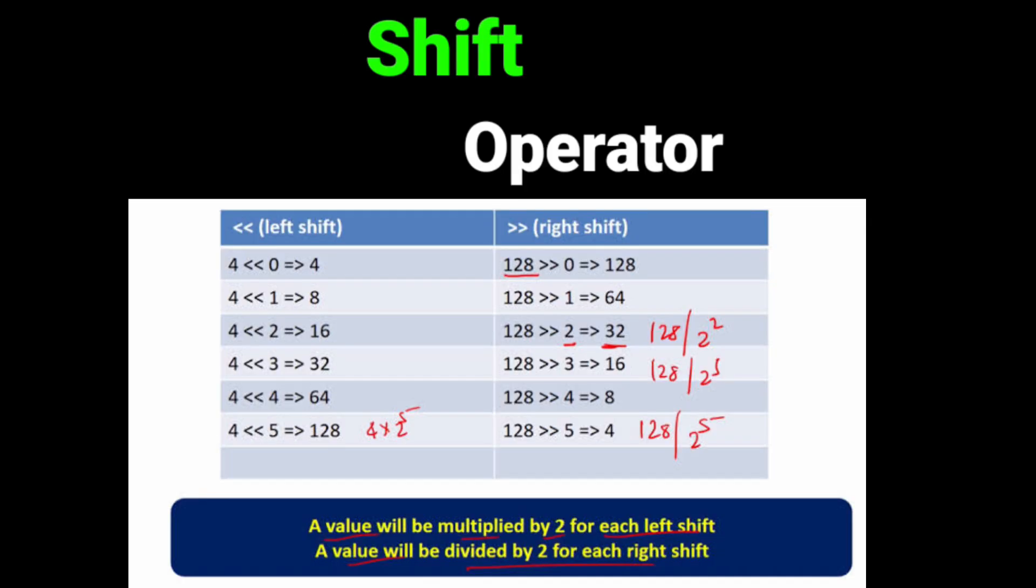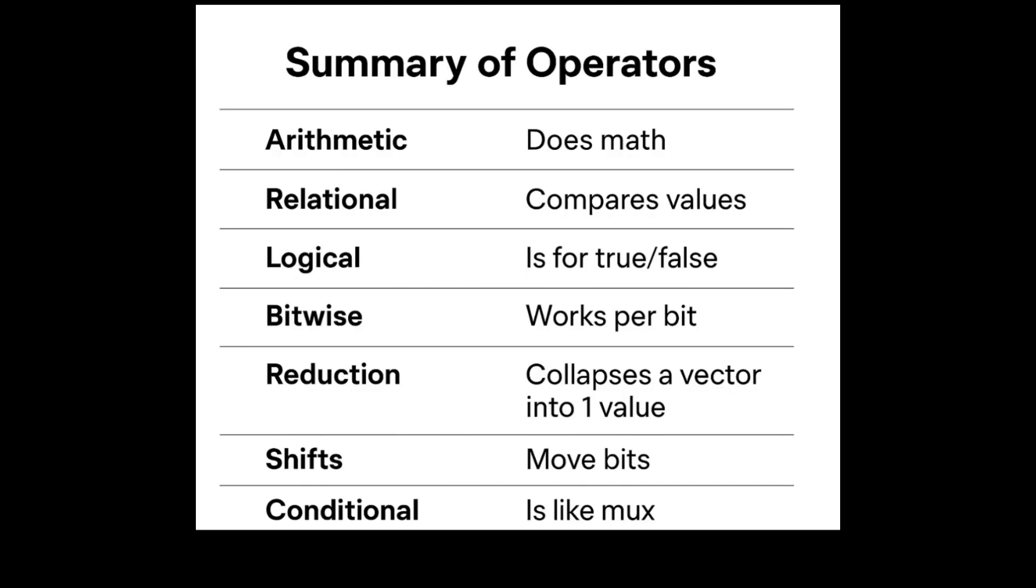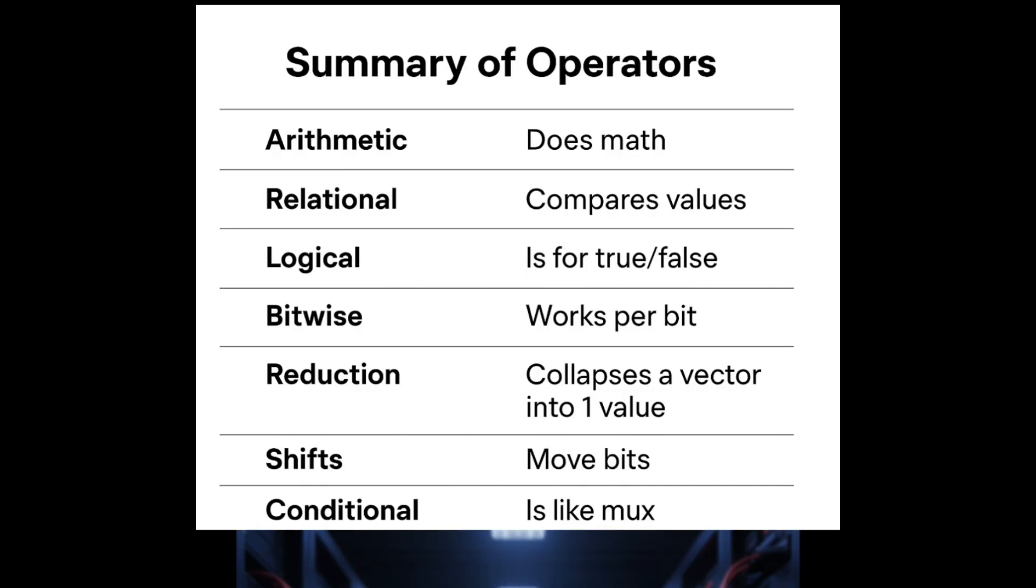Next is Shift Operators. These shift bits left or right. We have here logical left shift and logical right shift. Next is Conditional Operator. In Verilog, this is a shorthand if-else. In hardware, this directly represents a multiplexer. So, in Verilog: Arithmetic does math, Relational compares values, Logical is for true or false, Bitwise works per bit, Reduction collapses a vector into values, Shift moves bits, Conditional is like a mux.